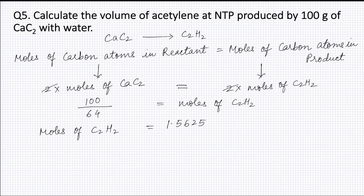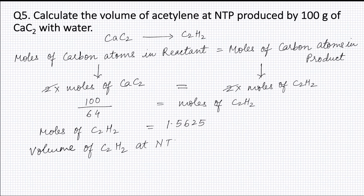Moles of C₂H₂ is equal to moles of CaC₂, that is 1.5625, multiplied by molar volume, that is 22.4 liters. This is equal to 35 liters. Therefore, the volume of acetylene at NTP produced by 100 grams of CaC₂ will be 35 liters.